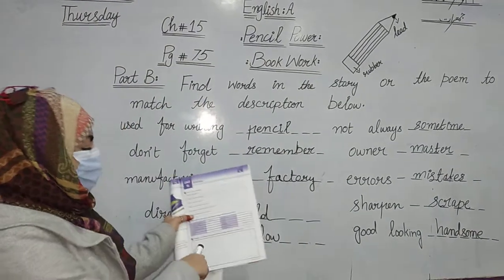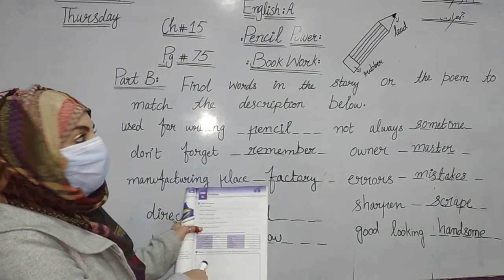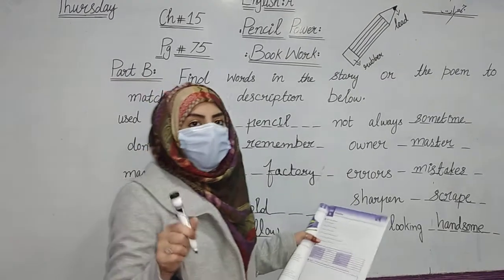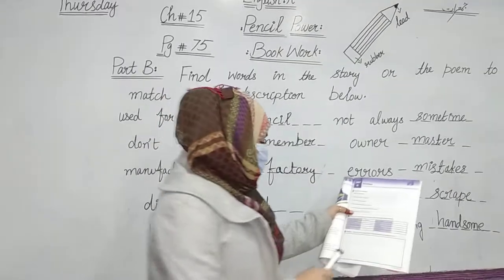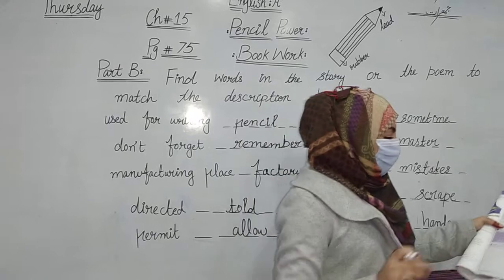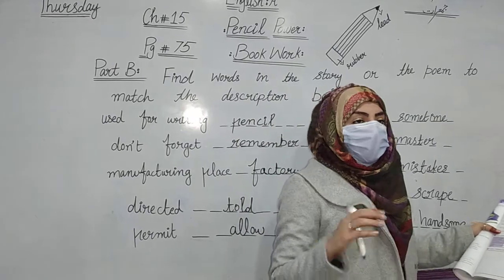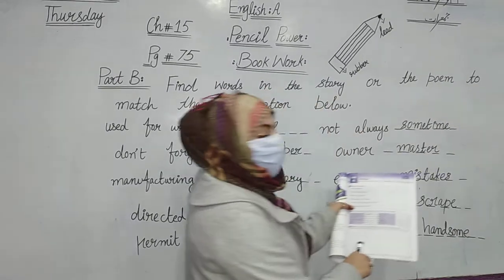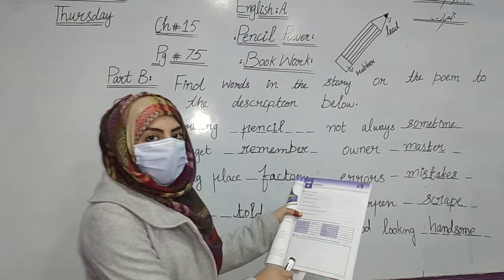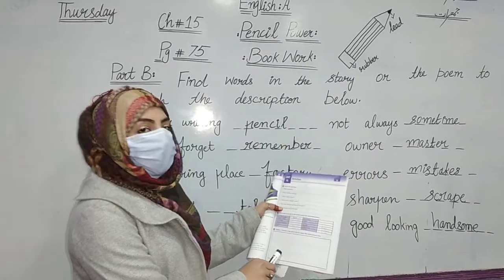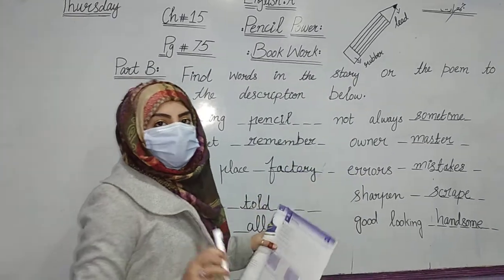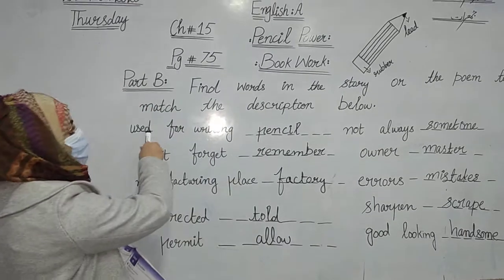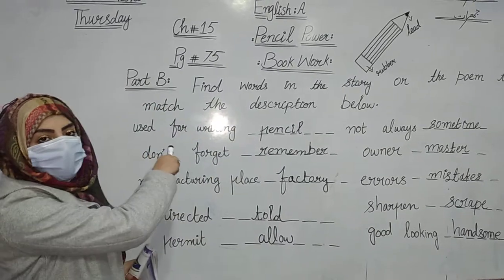Next, Part C on your book, page number 75, is your home assignment. In this part, you just draw a pencil. Imagine you have a new pencil, then name it and draw a very good pencil. So this is your home assignment, and also learn Part B, page number 75.